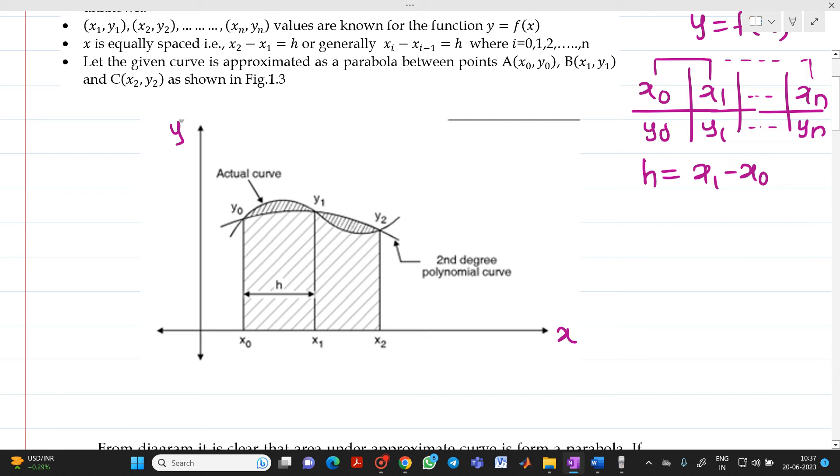If you see, whatever curve we have drawn, this curve is nothing but an actual curve. So, it is shown by arrow here. This will be the actual curve. Let us say, we will take one point which is denoted as A. Here, x will be equal to x0 at this point and y will be equal to y0 at this point.